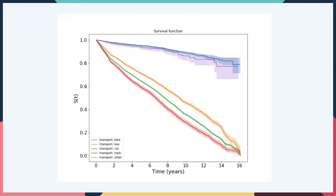Train is labelled in red, car is labelled in green, bus is in orange, bike is in blue, and other methods including walking is labelled in purple. We can now clearly see that if you commute to work via train, you are at most risk for leaving. We can also see a clear difference between cyclists in blue and car drivers in green, while the probability of cyclists to stay after 16 years is around 80%. For those who come by car, this is close to zero.